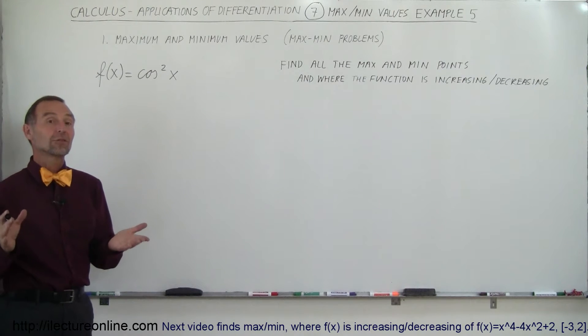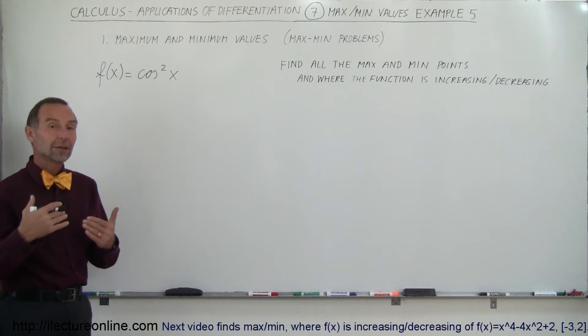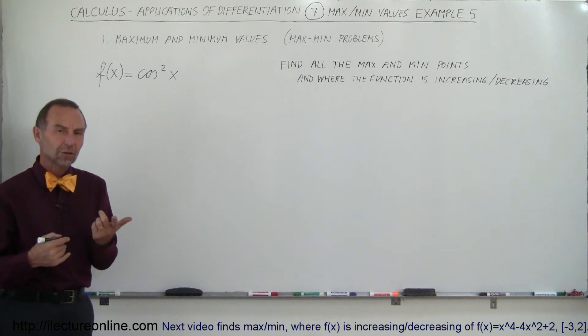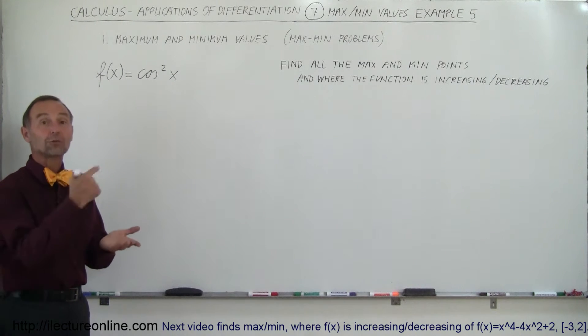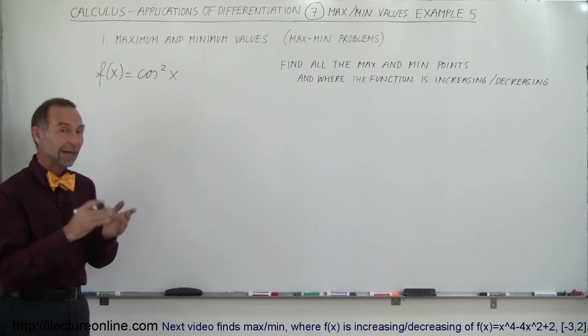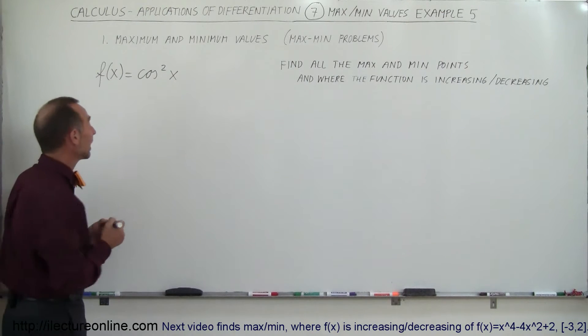To find the places where we have a max and a min, we know that's where the slope is equal to zero. We'll have to find the derivative, set the derivative equal to zero, and find those locations.